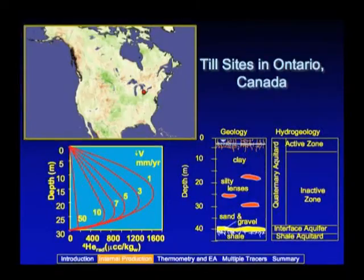To demonstrate that, let me take you to Canada — to Lambton County, where John Cherry and a number of his students and colleagues have been studying these low-permeability clay-rich tills. We know they have very low permeability from a number of different lines of evidence. One of my own students, Amy Sheldon, asked herself: what might I expect the helium-4 concentration in pore fluids to be as a function of depth, assuming it is leaking out of all of these clay minerals within this clay-rich aquitard?